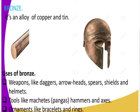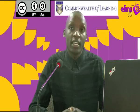We have different images here — the first image shows what bronze looks like. You can also use the internet to see more relevant images of how bronze looks. Bronze can be molded into different shapes. One use of bronze is to make weapons, for example daggers, arrowheads, spears, shields, and helmets. These helmets were used in past times when soldiers went to war.